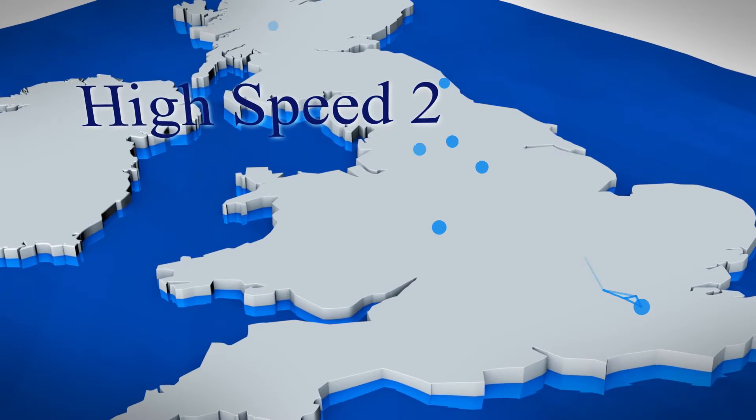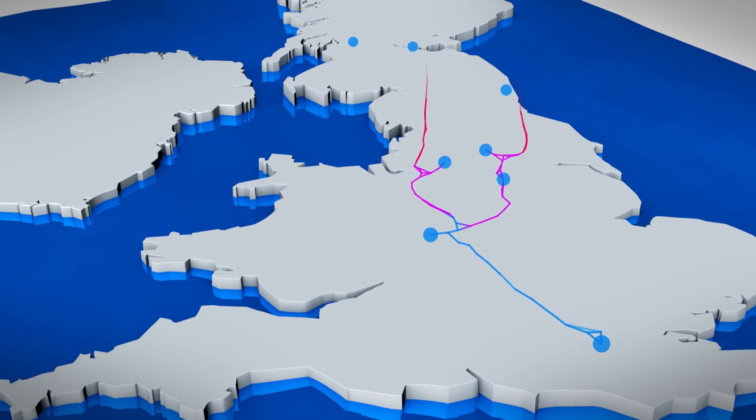See if, systematically, they've all had less movement, and that will enable us to improve our design processes and parameters. We can then implement on HS2 and Crossrail 2.